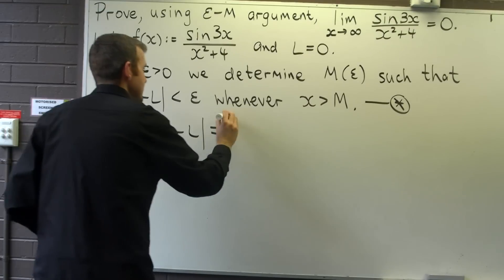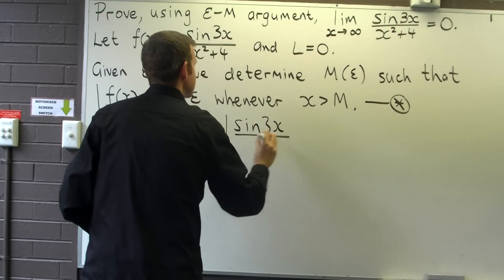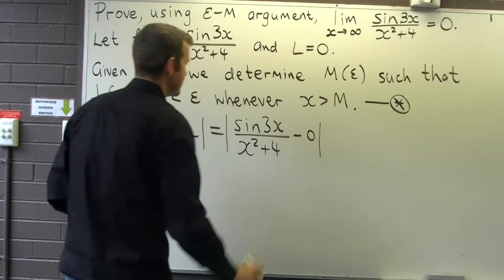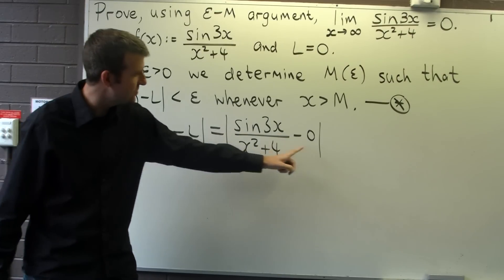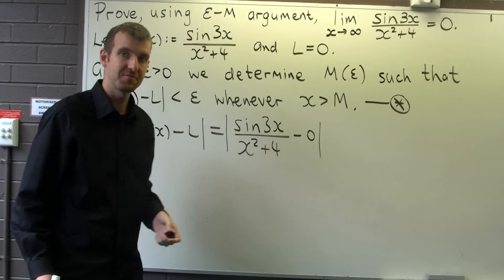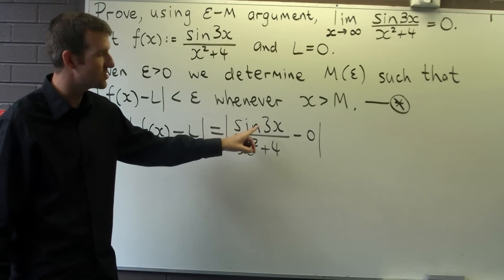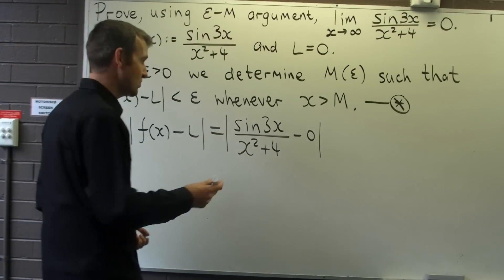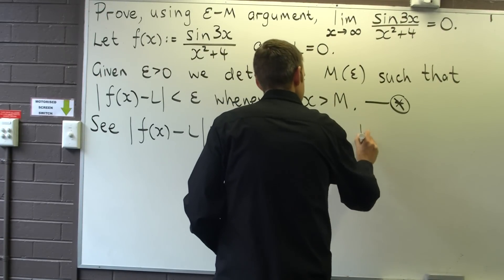Okay, so this is just |sin(3x)/(x²+4) - 0|. So what we're going to do now is try to simplify and remove somehow these absolute value signs. Well, obviously this is just going to disappear. We know that |sin(3x)| is less than or equal to 1.